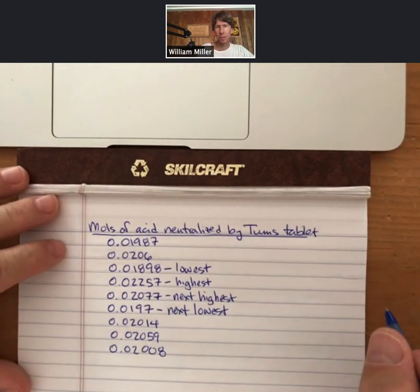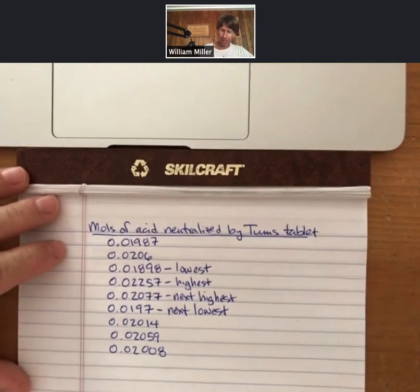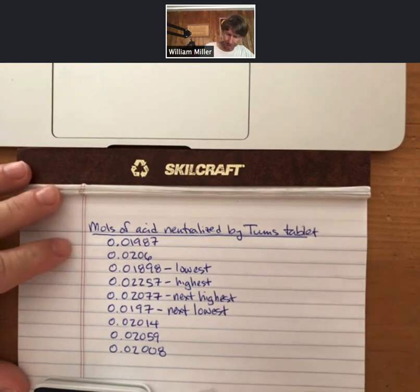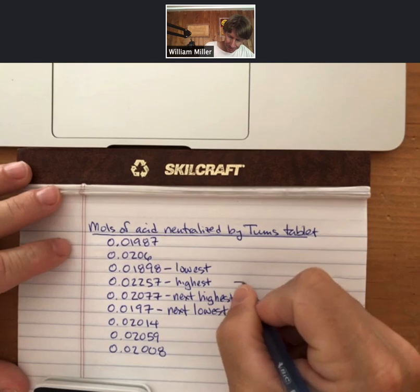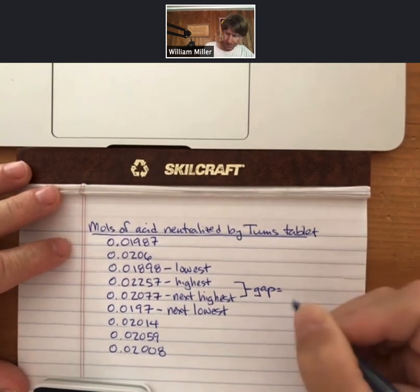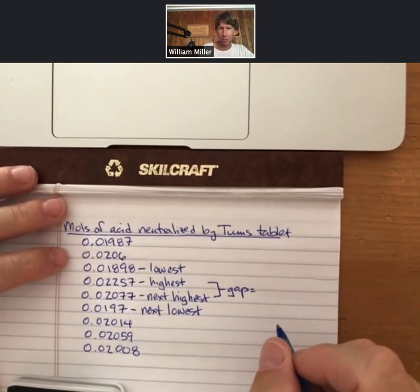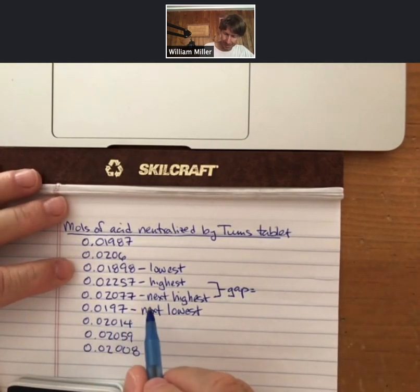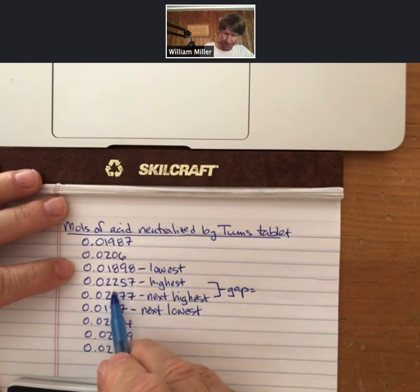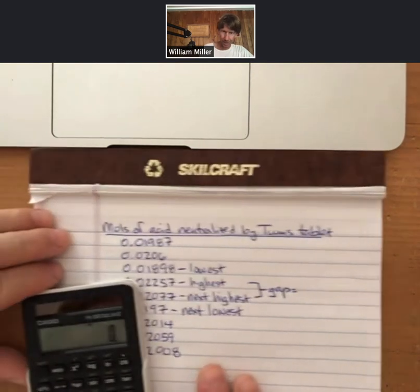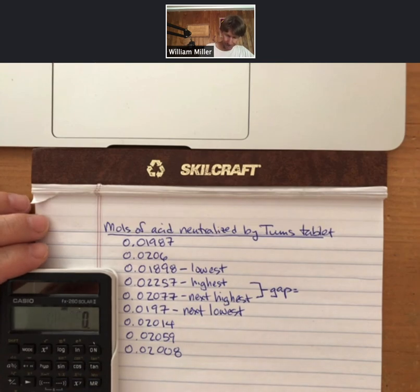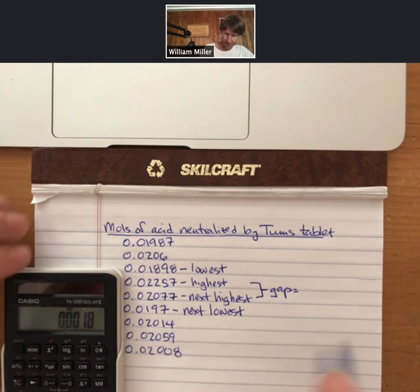What we're going to do is look to see what has the largest gap. The gap is the difference between the highest and the next highest, or the lowest and the next lowest. Let's try the gap between these two. This is going to be an absolute value, so there's no negative or positive, it's only the value. I'm going to take the highest minus the next highest, so that's 0.02257 minus 0.02077, and I get 0.0018.